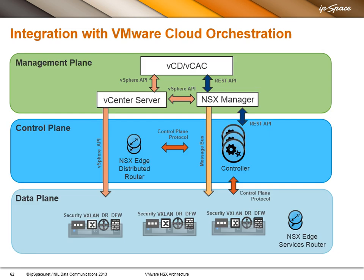If we focus on vCloud Director first — integration with VMware's cloud products — the orchestration system has to talk to vCenter using the well-known vSphere API. And then with the NSX manager, which is really the combination of NSX API and vShield API, it communicates through REST. And then there is the vSphere API between the NSX manager and vCenter, as before.